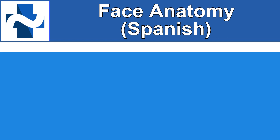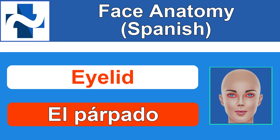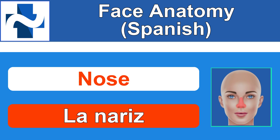The next one is eyelid. How do you say eyelid in Spanish? El párpado. El párpado. Nose — la nariz. La nariz. And notice it's not 'la nariz' with a z sound, because there's not really a zzz sound in Spanish — it's just an s sound basically.